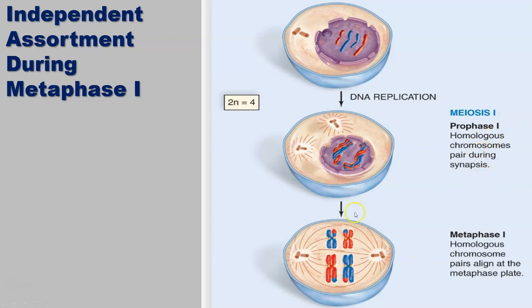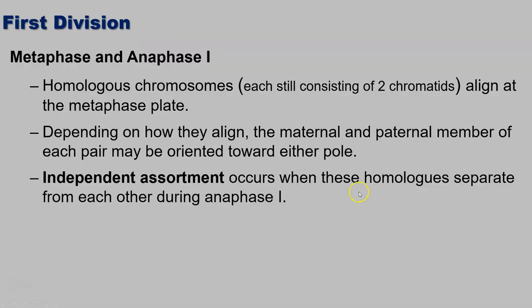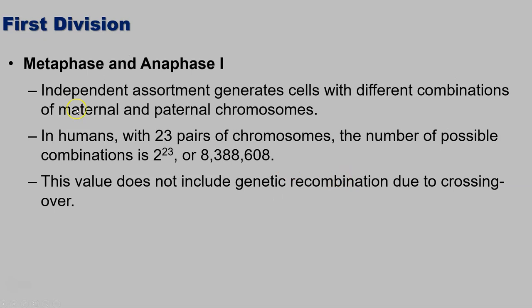This is just showing again independent assortment happening during metaphase I. Depending on how they align, the maternal and paternal member of each pair could be oriented toward either pole. Independent assortment generates cells with different combinations. In humans, we have 23 pairs of chromosomes, so the number of possible combinations is 2 to the 23rd, or 8,388,608 different possible variations. And this value does not even include genetic recombination due to crossing over. That's why you look similar to your parents but not identical, and you definitely don't look identical to your neighbor.